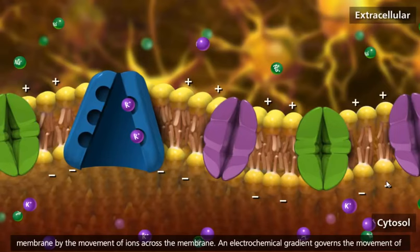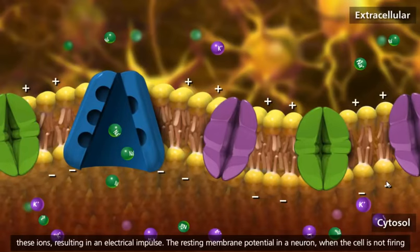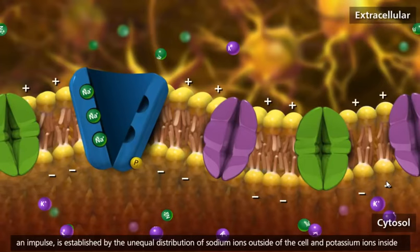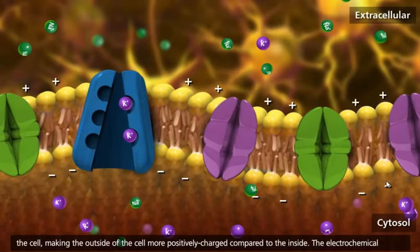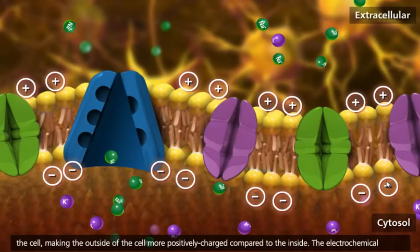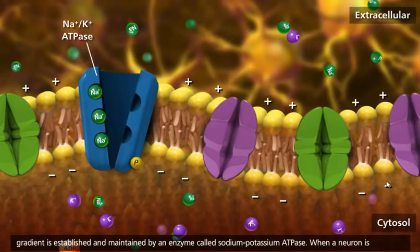An electrochemical gradient governs the movement of these ions, resulting in an electrical impulse. The resting membrane potential in a neuron, when the cell is not firing an impulse, is established by the unequal distribution of sodium ions outside of the cell and potassium ions inside the cell, making the outside of the cell more positively charged compared to the inside. The electrochemical gradient is established and maintained by an enzyme called sodium-potassium ATPase.